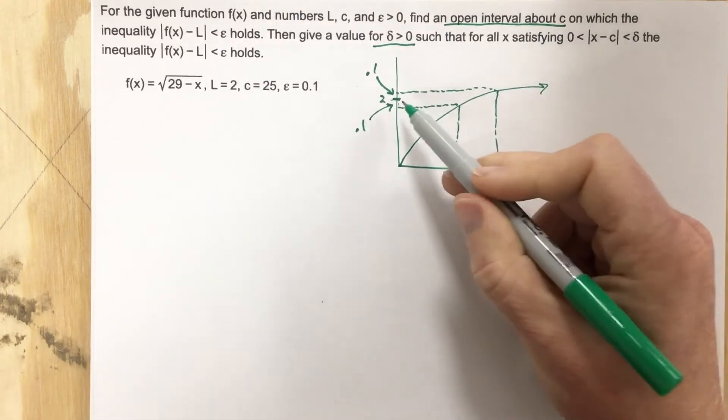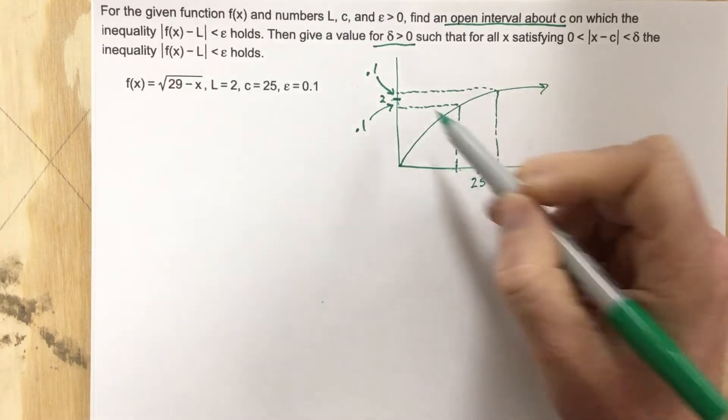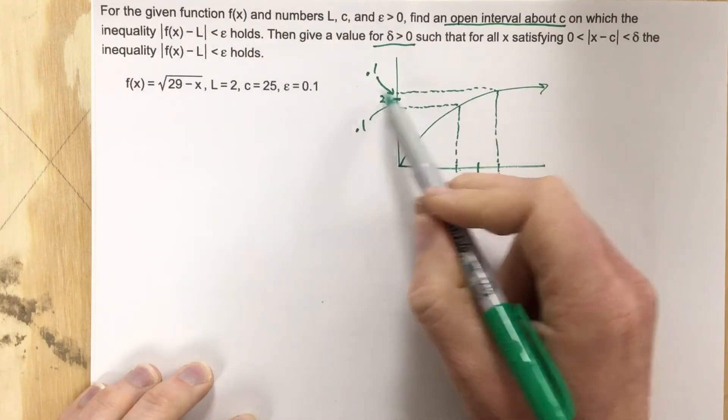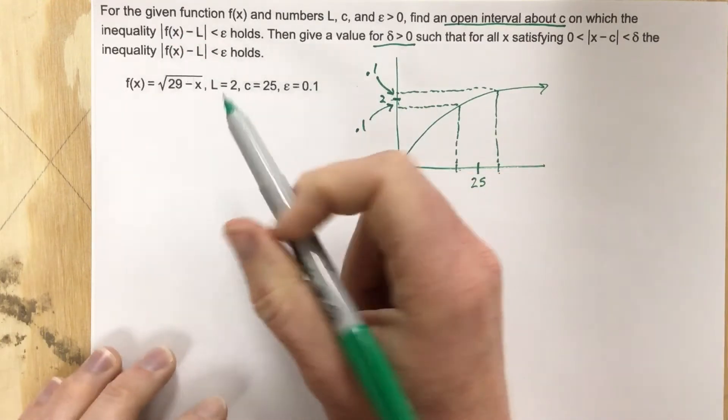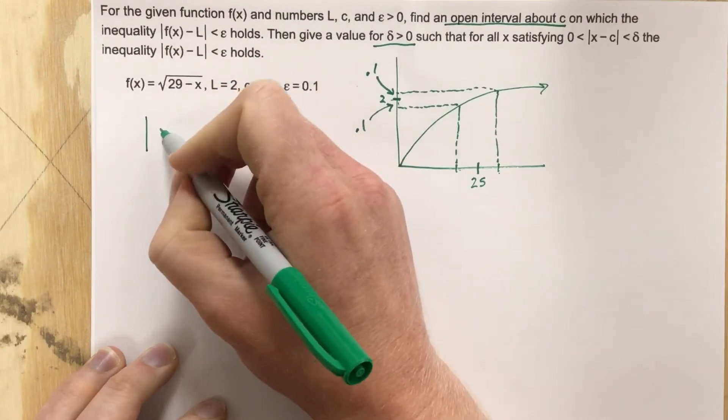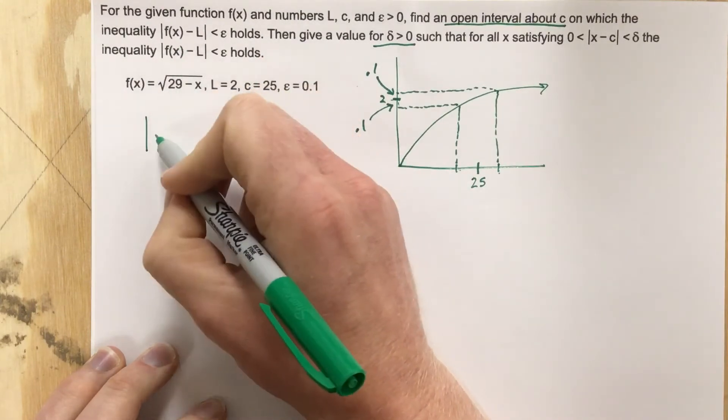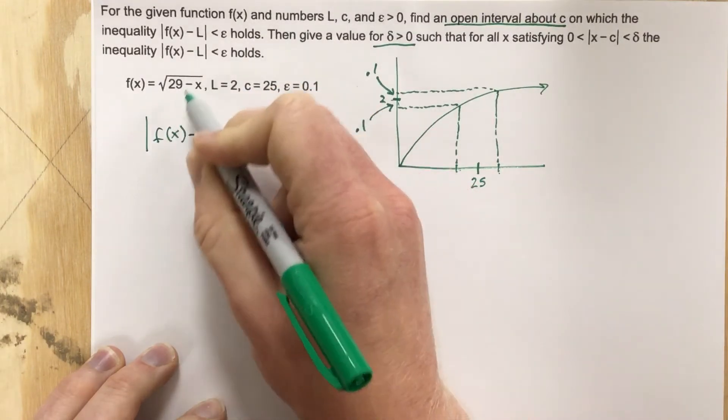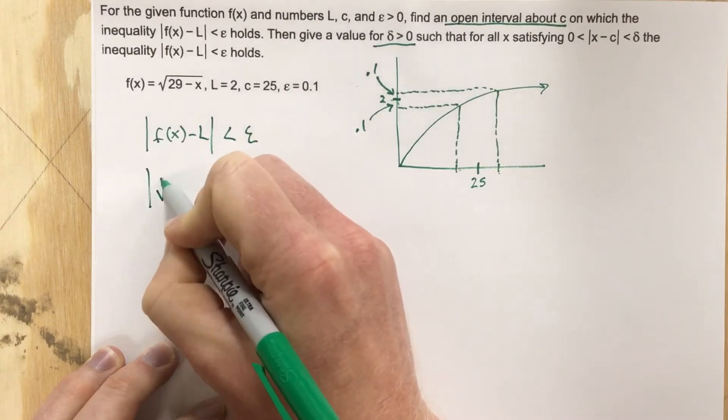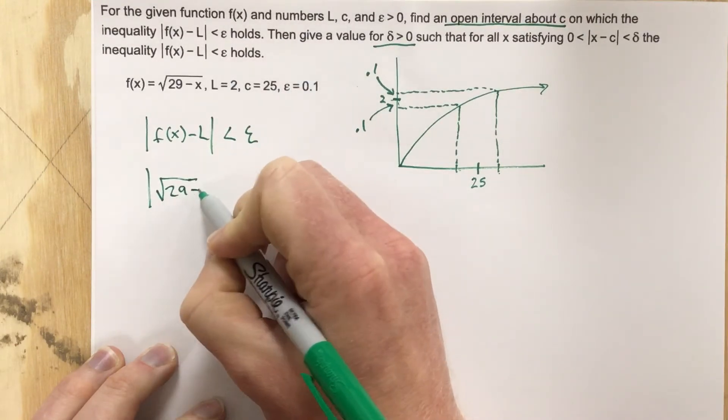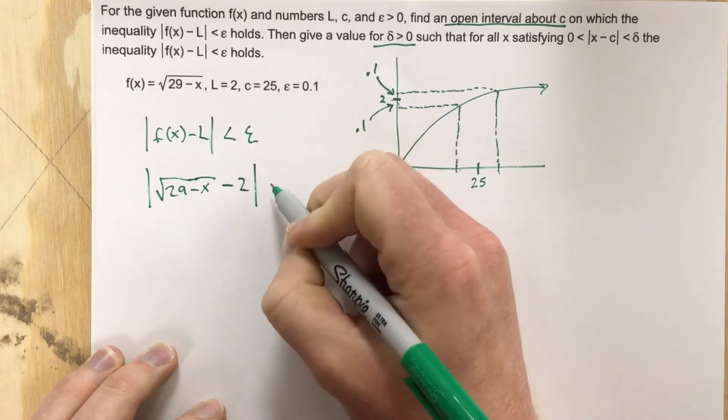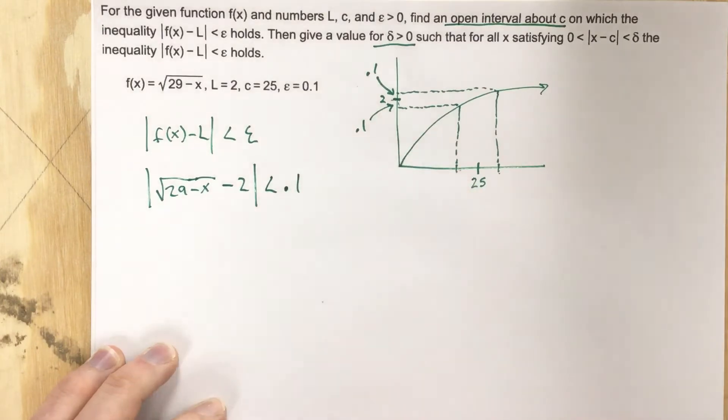So how do we start this? Well, let's start by finding the gaps for the x values by starting with our y value. We want to start with the y value and solve for x. So we're going to say |f(x) - L| < epsilon. We plug in |√(29-x) - 2| is less than our epsilon value, which is 0.1.